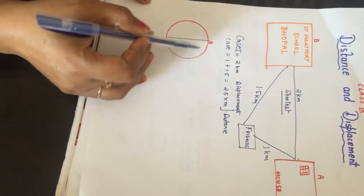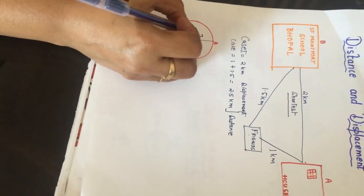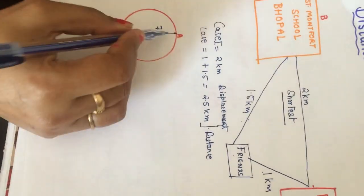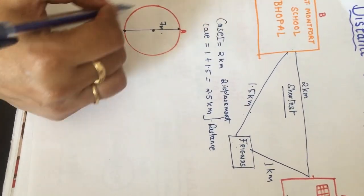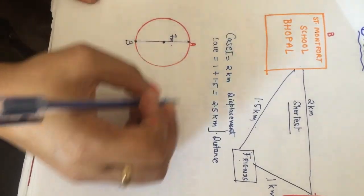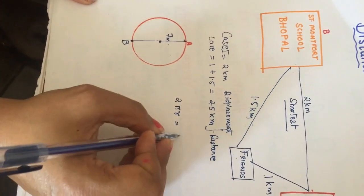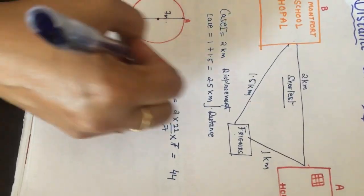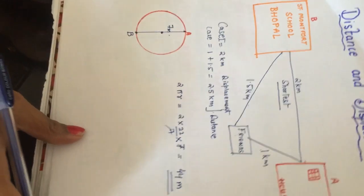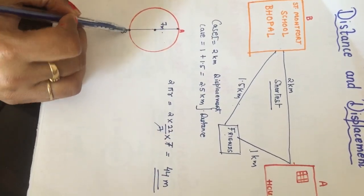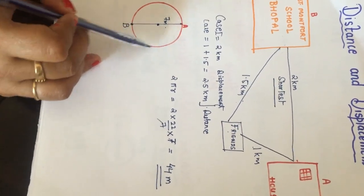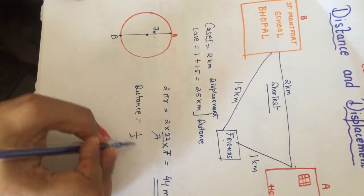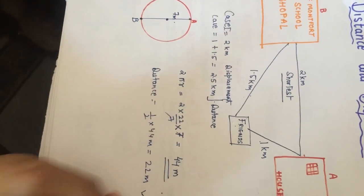Now let's look at a circular path with radius 7 meters. Suppose I want to move from point A to point B along the circumference. The full circumference is 2πr = 2 × (22/7) × 7 = 44 meters. When moving from A to B along the track (half the circle), the distance traveled is half of 44 meters, which is 22 meters.